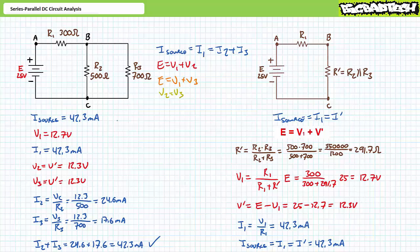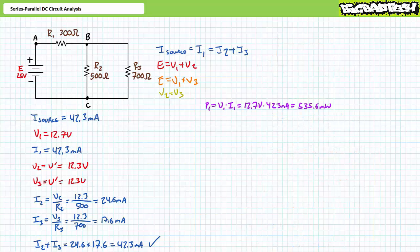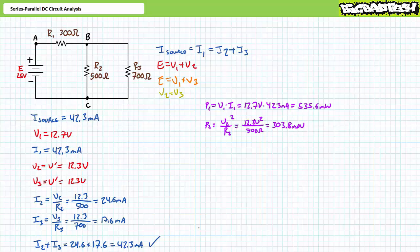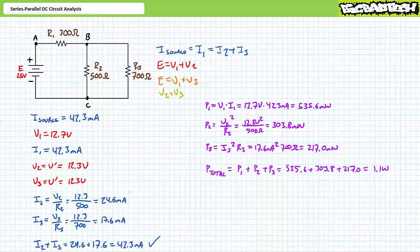Given these values, all we need to do now is solve for power. P1 equals V1 times I1 — substituting our calculated values demonstrates R1 dissipates 535.6 milliwatts. P2 equals V2 squared over R2 — R2 dissipates 303.8 milliwatts. Finally, P3 equals I3 squared times R3 — R3 dissipates 217 milliwatts. Total power equals P1 plus P2 plus P3, yielding 1.1 watts. As a means of checking our work, total power is also equal to supply voltage times source current, which similarly yields 1.1 watts.